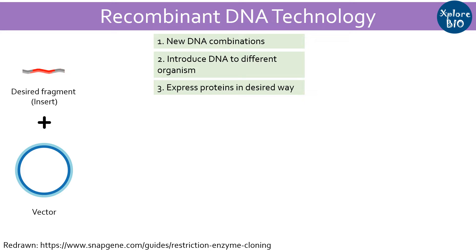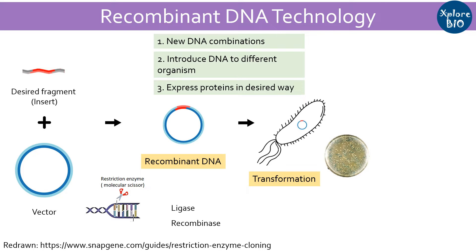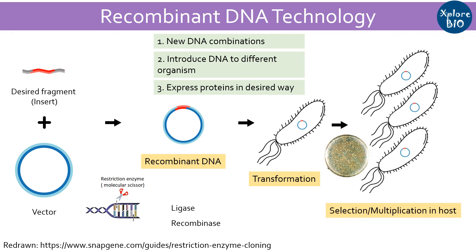In recombinant DNA technology, you need desired DNA fragments, a vector, and several molecular tools such as restriction endonucleases, DNA ligase, and recombinases to generate a recombinant DNA. This is followed by transformation and selection of transformants containing recombinant DNA on a suitable nutrient media.